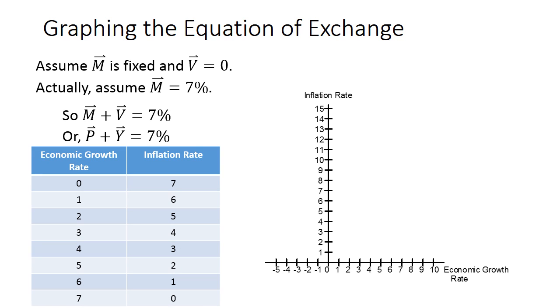Suppose that GDP is growing at a rate of 0. Stick a 0 in for Y, and you see that the inflation rate must be 7%. So we add a point to our graph. What if the economy grows at a rate of 1%? Then the inflation rate has to be 6, because 6 plus 1 equals 7.